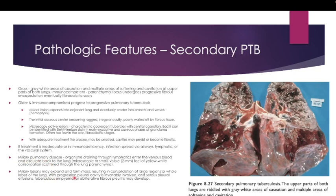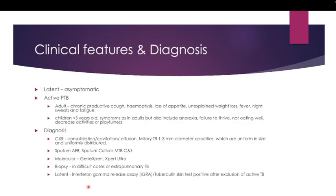Miliary lesions may expand and form masses resulting in consolidation of large regions or entire lobes of the lung. With progression, it affects the pleural cavity, causing pleural effusion tuberculosis and obliterative fibrous pleuritis.